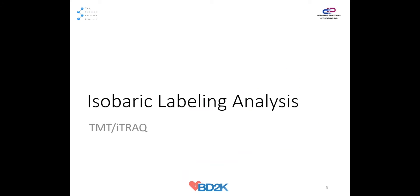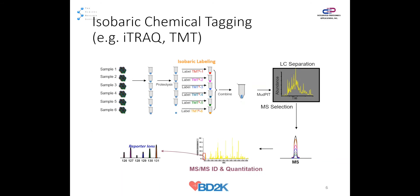The first update is isobaric labeling analysis. Isobaric labeling can be iTRAQ or TMT. You have multiple samples, label them, mix together, then run the sample. It generates MS1 scans — for the MS1, the labeled tags look identical — but when you generate fragment ions, you will see the reporter ions in the MS2 scan. You can see all different abundances of peaks, so you can compare the abundance of peptides.